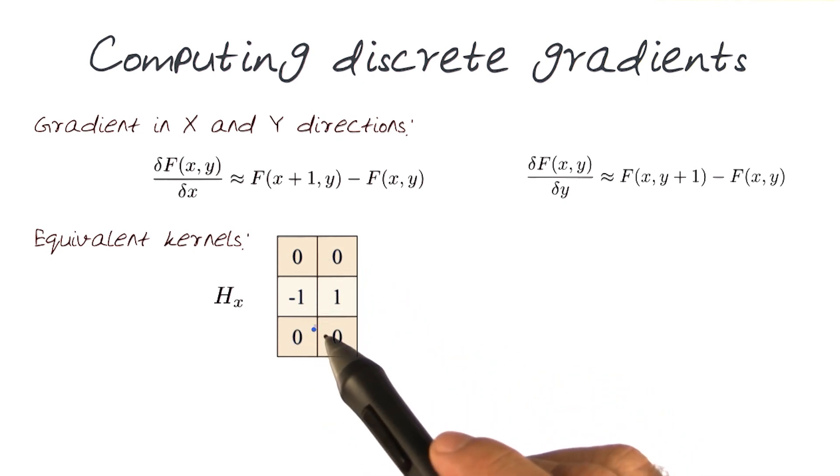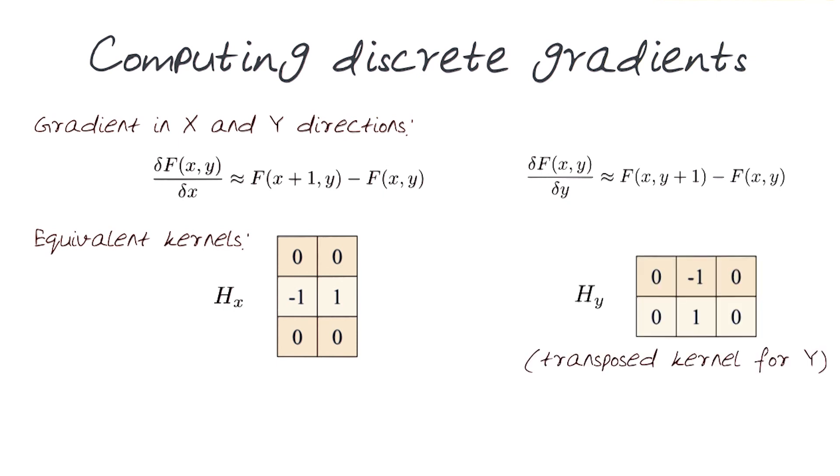If I use this in a cross-correlation framework, I will be able to generate a del x, or a gradient change in x image. For those thinking how would I get the Hy? I would actually just transpose this.